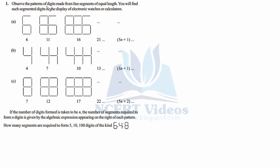Observe the patterns of digits made from line segments of equal length. You will find such segmented digits on the display of electronic watches or calculators. We have 6 appearing 1 time, 2 times, 3 times; similarly 4 and 8 appear multiple times. If the number of digits formed is taken to be n, the number of segments required to form n digits is given by the algebraic expression appearing on the right of each pattern. How many segments are required to form 5, 10, and 100 digits of the kind 6, 4, and 8?